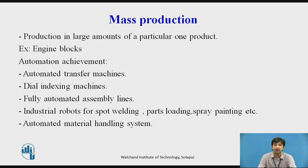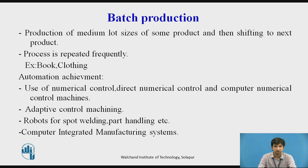Mass production also uses industrial robots for spot welding, parts loading, and spray painting, along with automated material handling systems. In batch production — production of medium lot sizes of a product before shifting to the next product, repeated frequently, for example books or clothing — automation is achieved through numerical control, direct numerical control, and computer numerical control machines, adaptive control machining, and robots for spot welding, part handling, and computer integrated manufacturing systems.